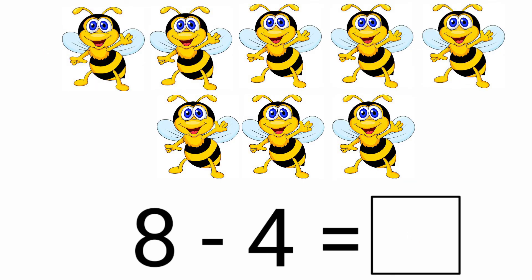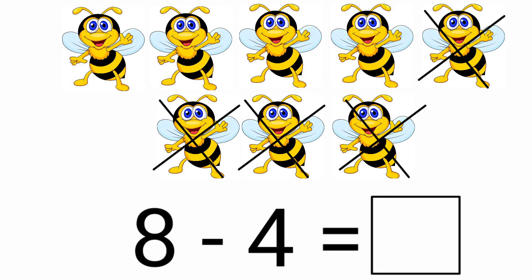Look at the next picture. How many honeybees are there? There are 8 honeybees. Here we need to subtract 4 honeybees from 8 honeybees: 8 minus 4 equals. We subtract from right to left: 1, 2, 3, 4. How many honeybees are left? There are 4 honeybees left: 1, 2, 3, 4. Let's write it in the given box. The answer is 4. 8 minus 4 equals 4.